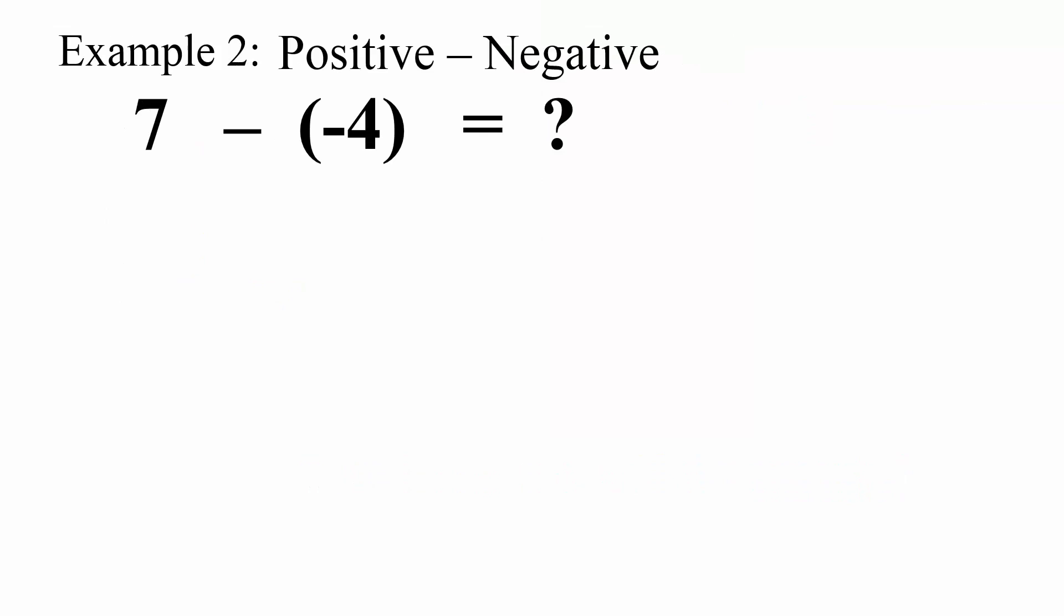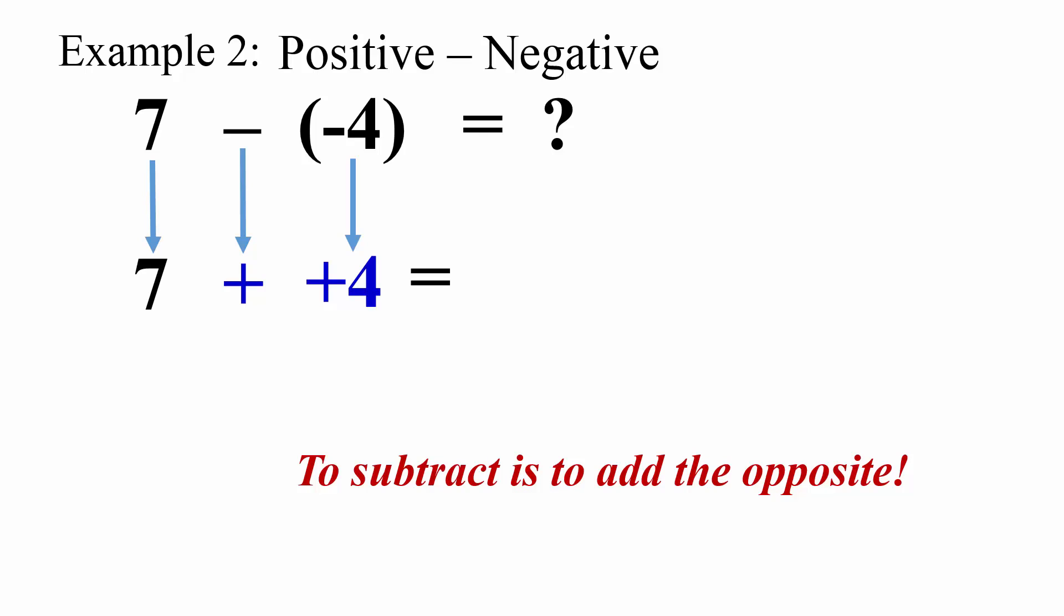Example 2: 7 subtract negative 4. 7 stays the same. Subtraction become addition. The opposite of negative 4 is positive 4. 7 plus 4 equals 11.